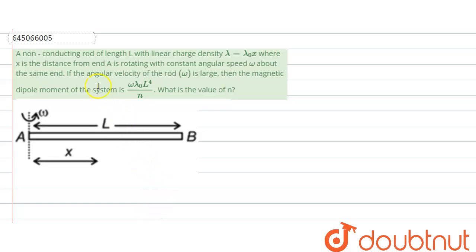Hello everyone, let us start with our question. In this question, what is given is that there is a non-conducting rod of length L with linear charge density lambda, and lambda is a function of x. It is equal to lambda naught into x, where x is the distance from end A, and it is rotating with angular velocity about the same end.